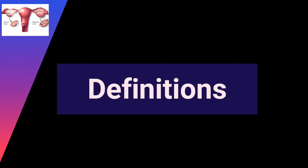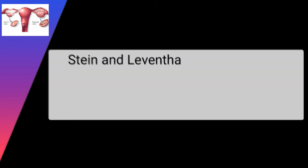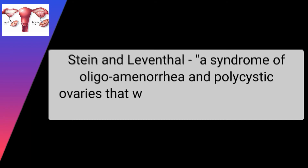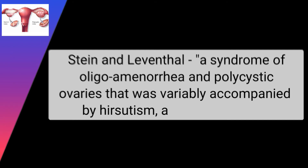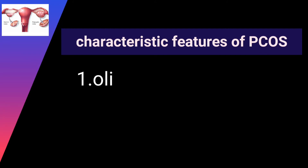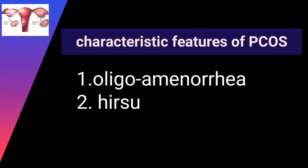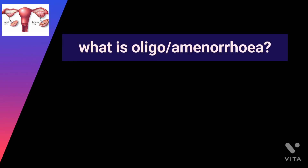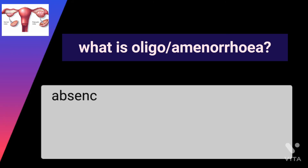Stein and Leventhal first described the syndrome as a syndrome of oligo-amenorrhea and polycystic ovaries, variably accompanied by hirsutism, acne, and obesity. By now you have come to know that PCOS is characterized by the presence of oligo or amenorrhea, hirsutism, and ultrasonic evidence of polycystic ovaries.